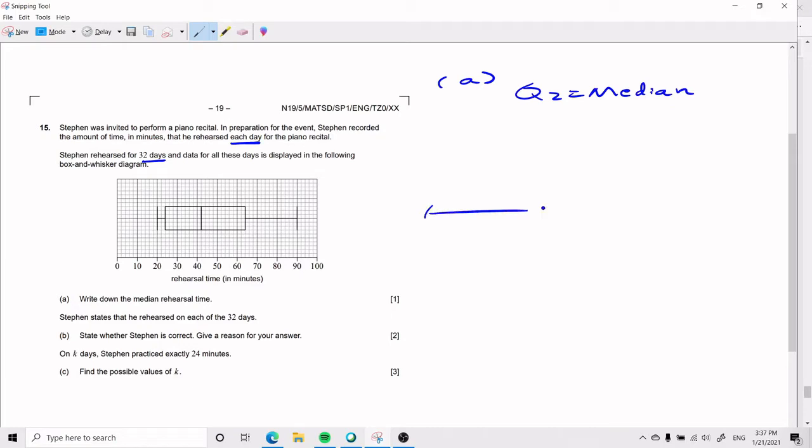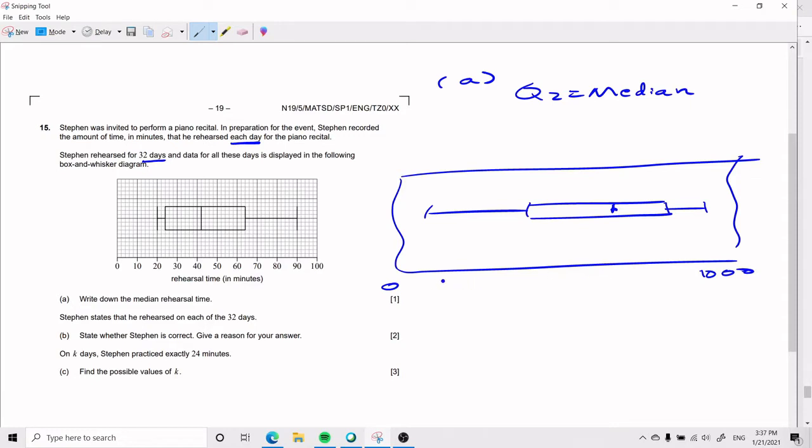So, when you have a box and whisker plot, it looks something like this. As we have the diagram as well, right? We have our x-axis and the y-axis, but what really matters is the x-axis. It can start on zero and reach like whatever, like a thousand. It doesn't matter.